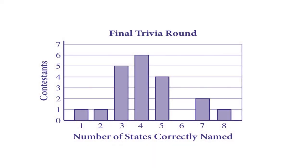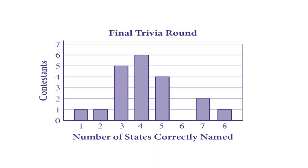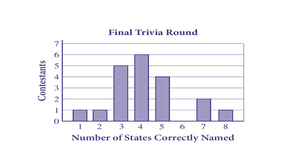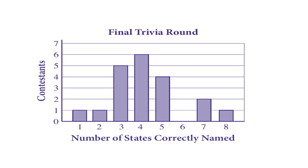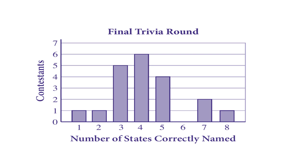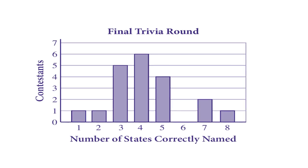The number of states they could correctly name and then the number of contestants who named that many. So if I add up the values on this axis of all of my columns, I will have the number of contestants.